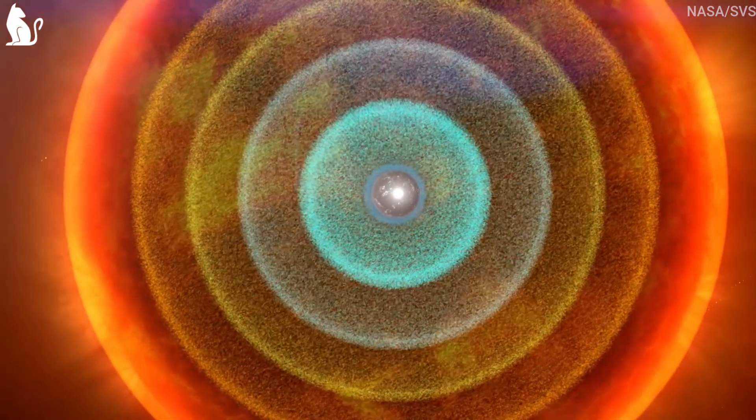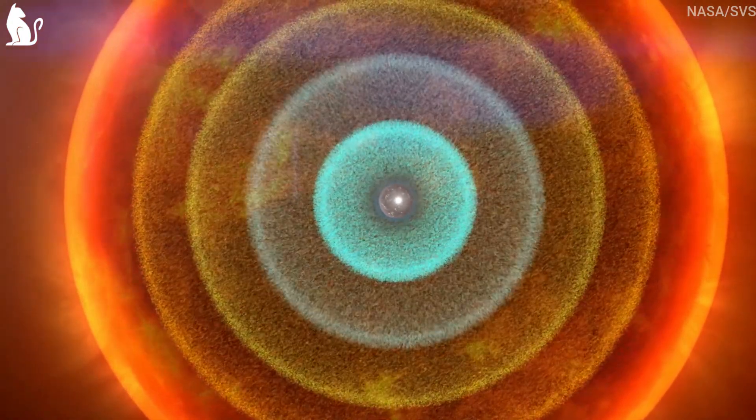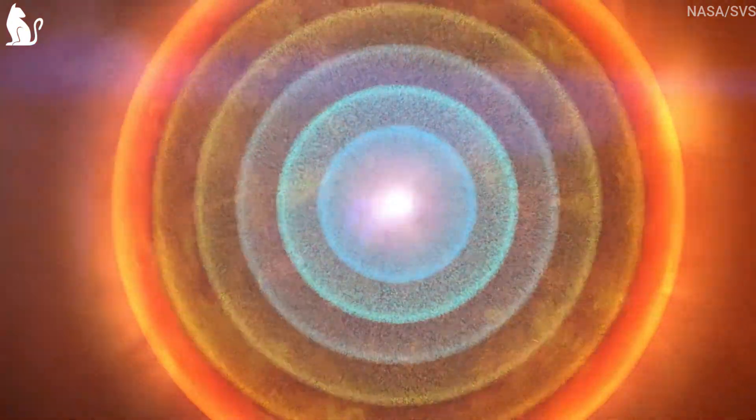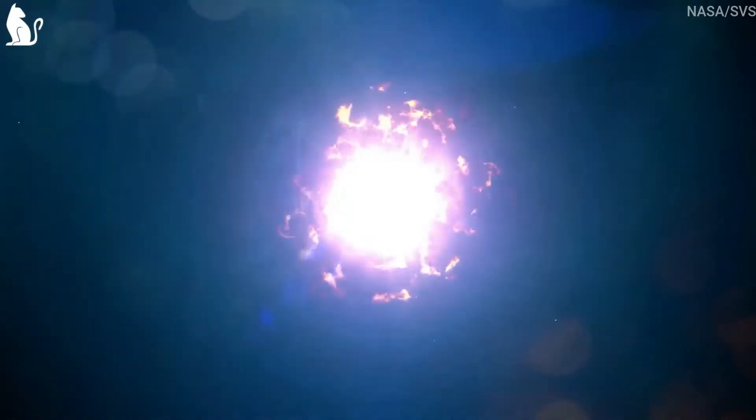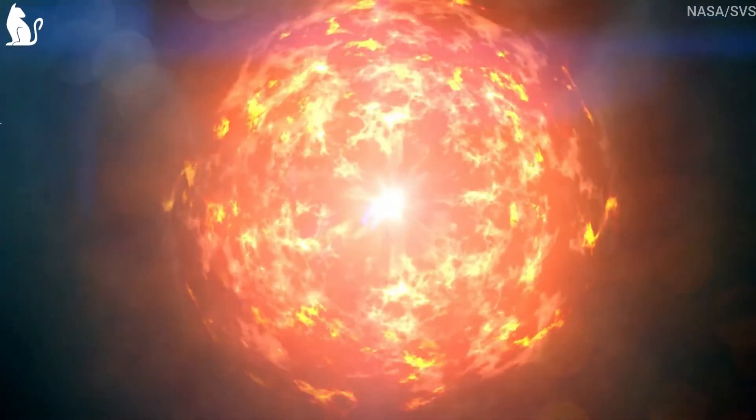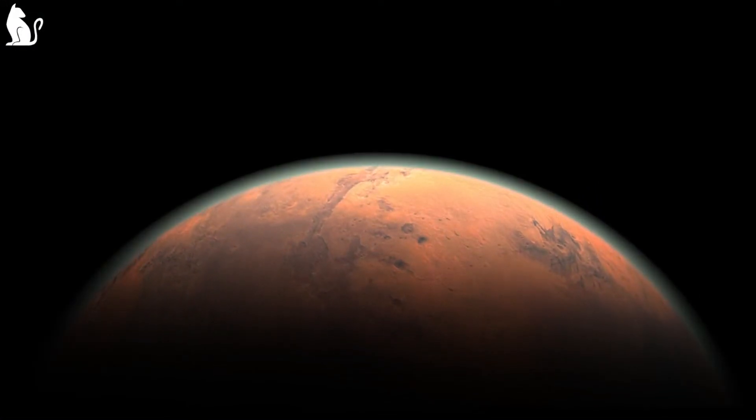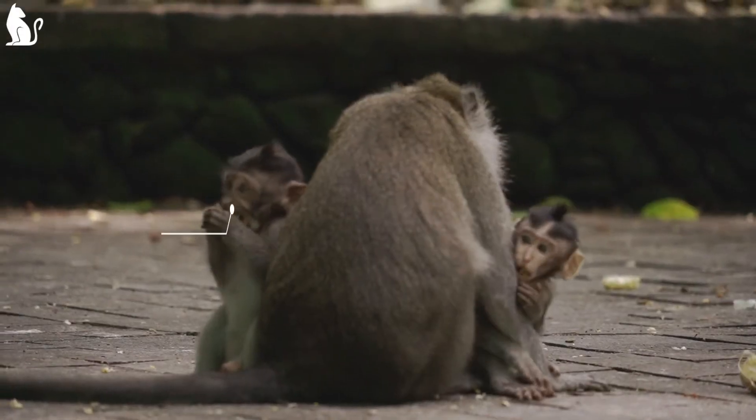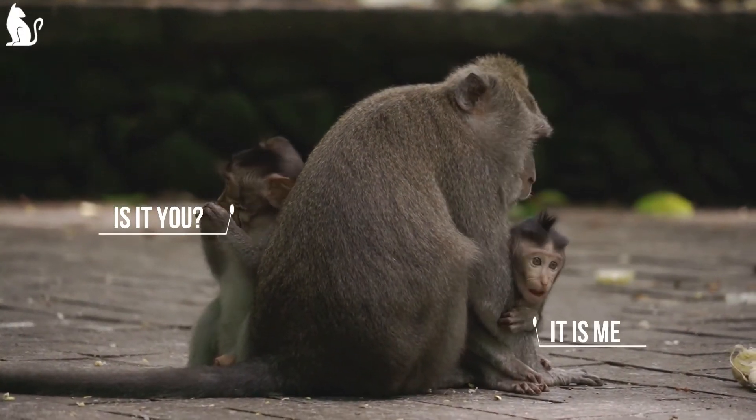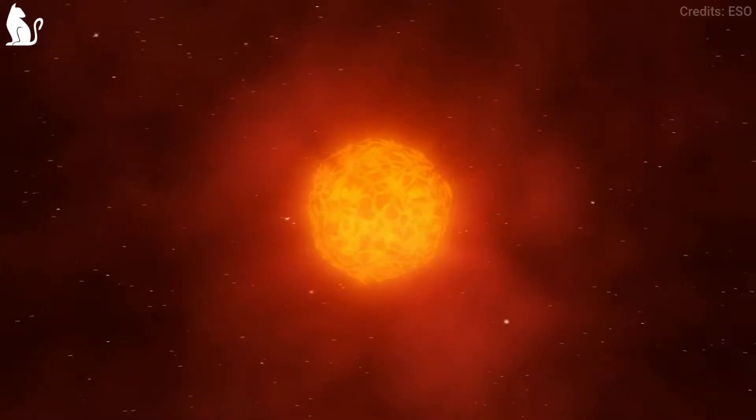The gravity becomes so much that the outer layers of the star cannot keep producing enough energy to keep on going. Suddenly, it collapses inside its own core. This is how most heavy elements in this universe came into place. These explosions scatter the heavy elements everywhere in space. This is how the rocky planets like Earth, Mars has come into existence. This is from where you, me, everyone else actually came into existence.